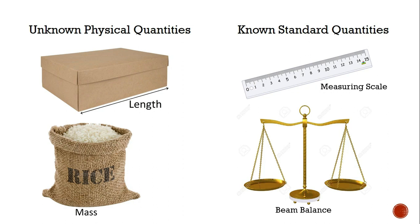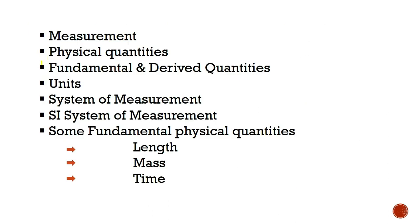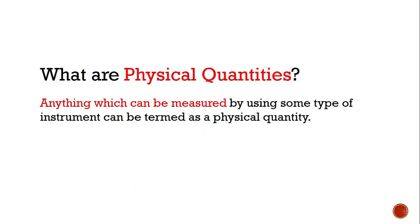I hope you understood the meaning of measurement from my previous video. If you have not seen it yet, I request you to please check that out first. Now coming back, today the topic of our discussion will be physical quantities and their types — fundamental and derived quantities. So what are physical quantities? Anything which can be measured is termed as a physical quantity.